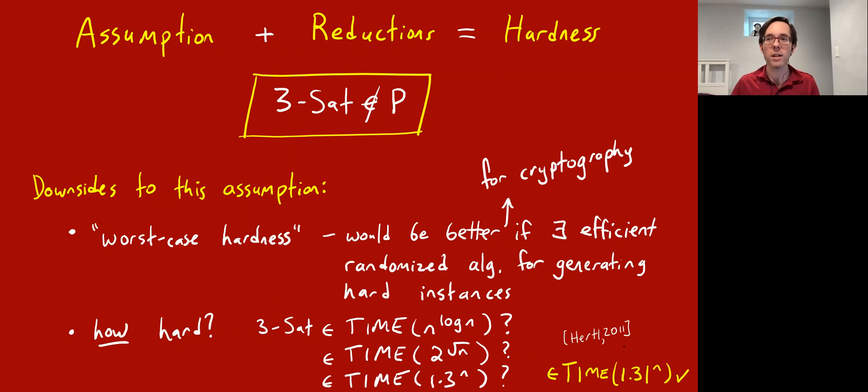In fact, it is in 1.31 to the n time. That's a result of Hertl from 2011. And so you see that already something kind of interesting is going on. If you care about small values of n, you know, 10, 20, 30, then these things can make a difference. So these are the kinds of things I want to talk about in this lecture - maybe making different assumptions that allow us to get richer hardness results, more precise hardness results, and hardness results that are better for applications.